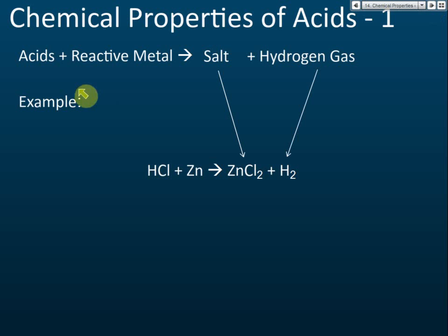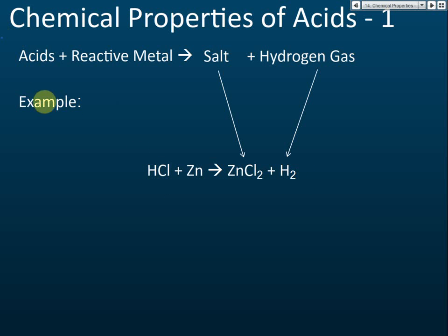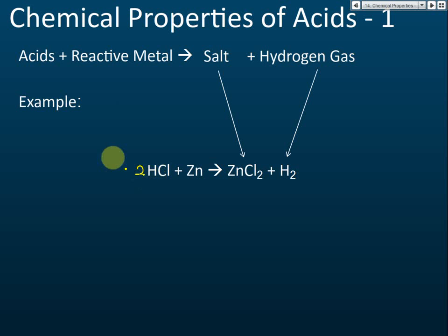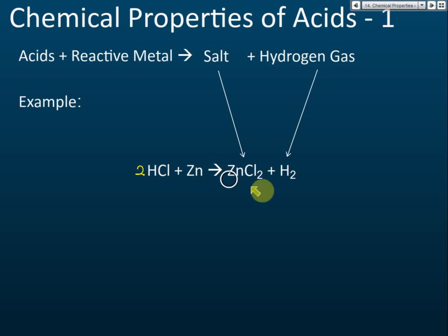This chemical equation is not balanced. You can see there are two hydrogens on one side and one hydrogen on the other. To balance the equation, we put a coefficient of 2 here to make it balanced. So acids react with reactive metals to produce salt and hydrogen gas.